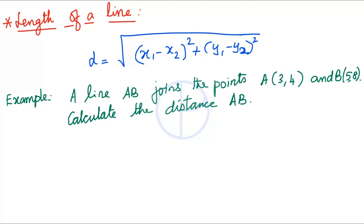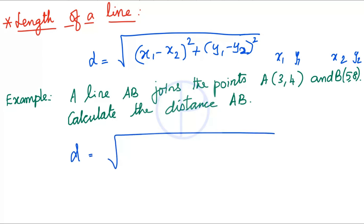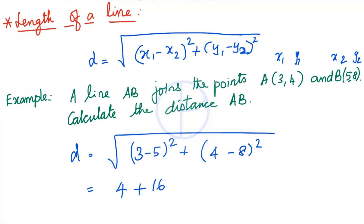Example: A line AB joins the points (3, 4) and (5, 8). Calculate the distance AB. Taking x1 = 3, y1 = 4, x2 = 5, y2 = 8: d = √( (3 − 5)² + (4 − 8)² ) = √( (−2)² + (−4)² ) = √( 4 + 16 ) = √20 ≈ 4.47.